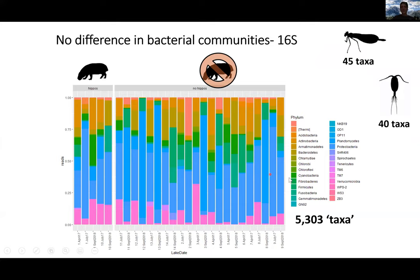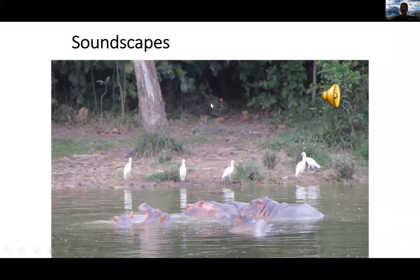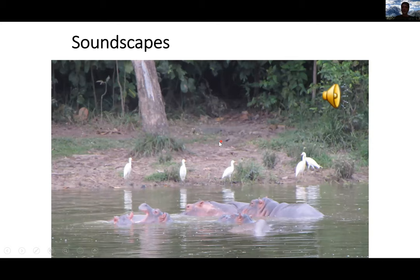For bacteria, using sequencing of about 5,000 taxa, we found no difference in composition between hippo and no-hippo lakes. Similarly, for invertebrates — insects and zooplankton crustaceans — we also found no difference in composition. So we only found significant differences in composition for the phytoplankton. For soundscapes, we did find significant differences in the kinds of sounds recorded at hippo lakes versus no-hippo lakes, but we weren't able to get enough data to be very confident in those results, so we're planning more sampling in the next phase of the research.